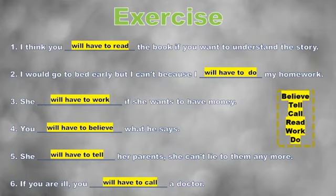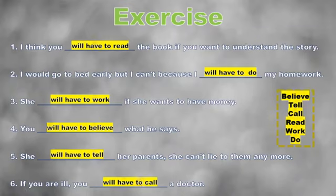As you can see, this topic is very easy — you write 'will have to,' or in the negative 'won't have to.' What's important is knowing the verbs. If you don't know the verbs, you can't complete the sentences. You have to practice different verbs like read, work, and believe. Now we're going to continue with another activity.